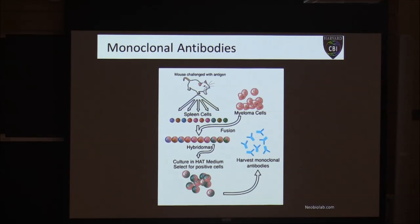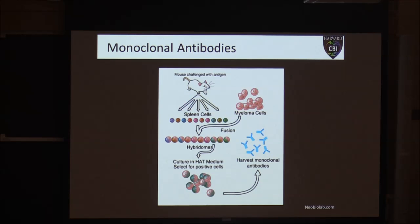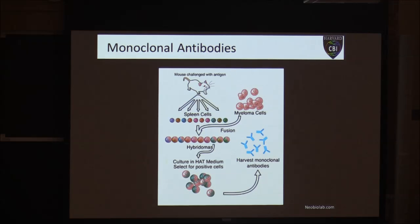Monoclonal antibodies — mono standing for single — give us a single type of antibody to a single region of our epitope or protein of interest. The process to make these is a little different. We start the same way: we take our antigen and inject it into an animal, in this case usually a mouse.